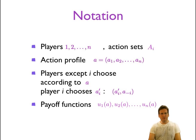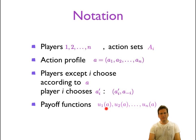Payoff functions describe how each player's payoffs are determined by the choices of all other players and their own choices. So a is an action profile — it specifies an action for each player — and u sub 1 of a is the utility or payoff to player 1 of the action profile a, and so on for all the other players.